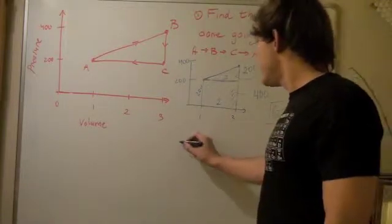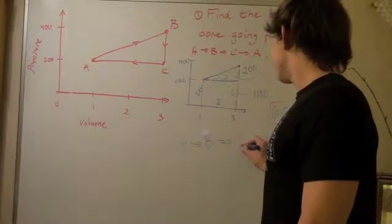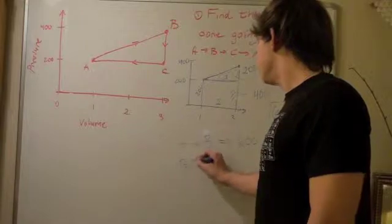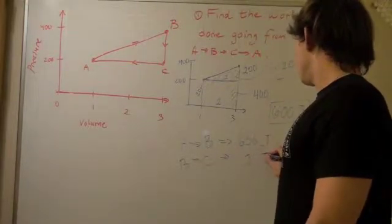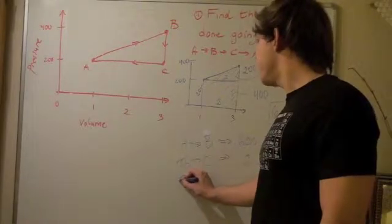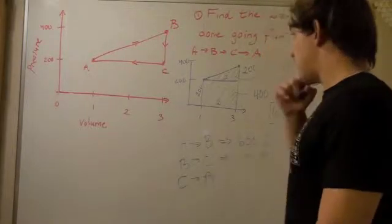So, to recap, going from A to B requires 600 joules. Going from B to C requires 0 joules, and now let's calculate what it means to go from C to A.